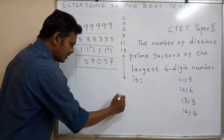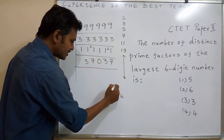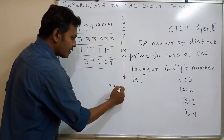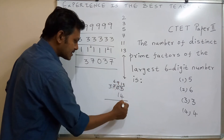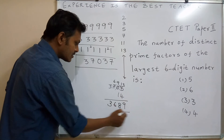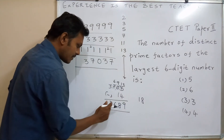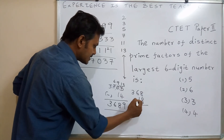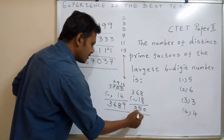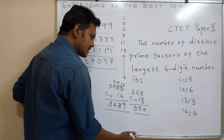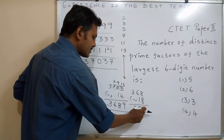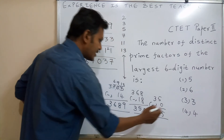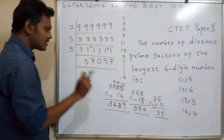Twice the last digit of 37,037 is 14. Separating and subtracting gives 3,703. Applying the rule again: twice 3 is 6, giving 363, then further reductions give 35. Since 35 is divisible by 7, the number 37,037 is divisible by 7, yielding a quotient of 5,291.